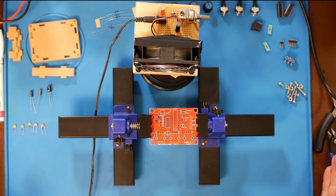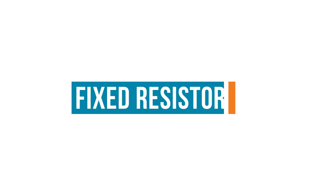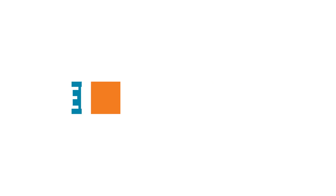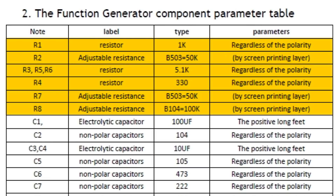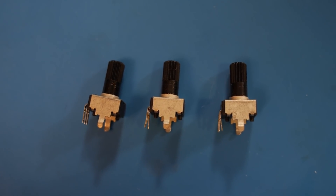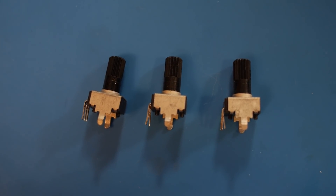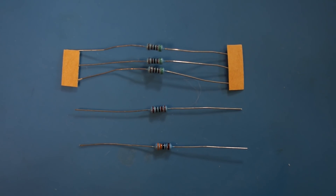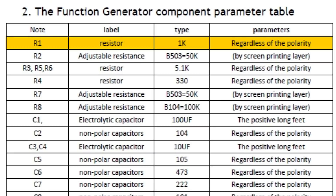I've got all the components laid out here, and as usual with these kits, it's best to start with the lowest profile parts and work up. That means starting with the resistors. There's R1 through R8, but three of those are adjustable resistance potentiometers. Those will be saved for last. The five remaining fixed resistors are one 1K, one 330 ohm, and three 5.1K. Can't forget safety.